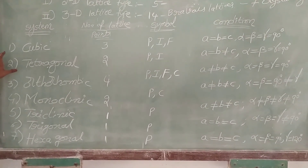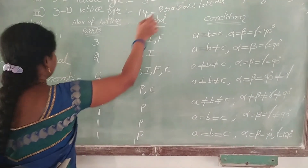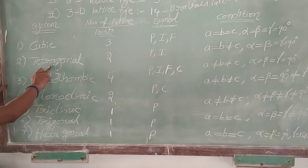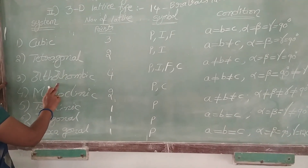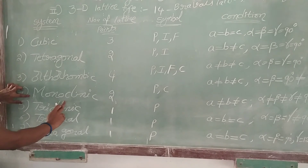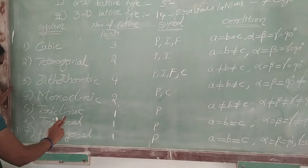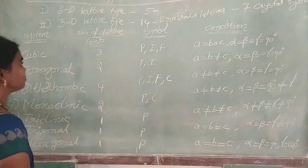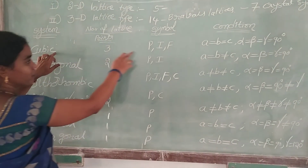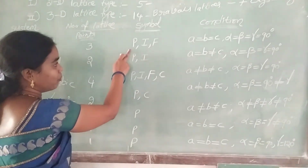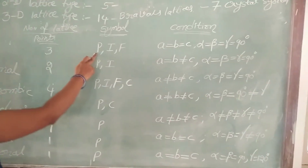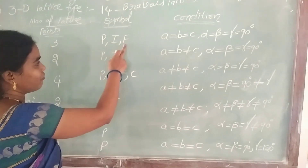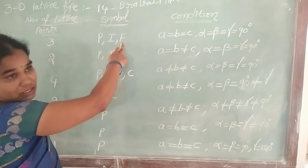These are combined from 14 types of Bravais lattices. There are 3 types of cubic crystal systems, 2 types of tetragonal, 4 orthorhombic, 2 monoclinic, 1 triclinic, 1 trigonal, and 1 hexagonal crystal system. These three types of cubic crystal systems are denoted by the symbols P, I, and F. P means primitive crystal, I is body centered, and F is face centered.